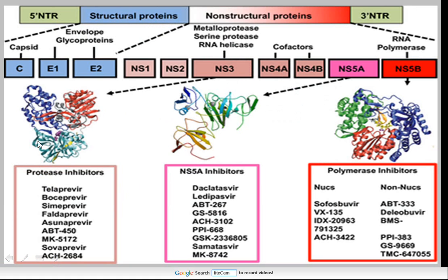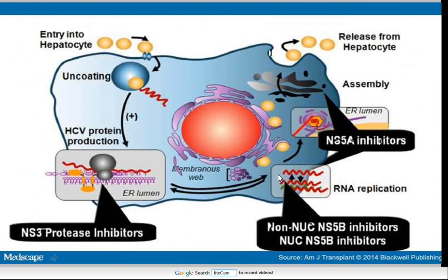These are some of the molecules targeting these viral targets: the protease inhibitors like telaprevir, boceprevir, simeprevir, asunaprevir, and others; the non-structural 5A inhibitors and replication complex inhibitors like daclatasvir, ledipasvir, and others; the non-structural 5B or polymerase inhibitors like nucleotide analogues and non-nucleotide analogues, sofosbuvir, and others. This figure depicts the targets and the molecules targeting these non-structural proteins.